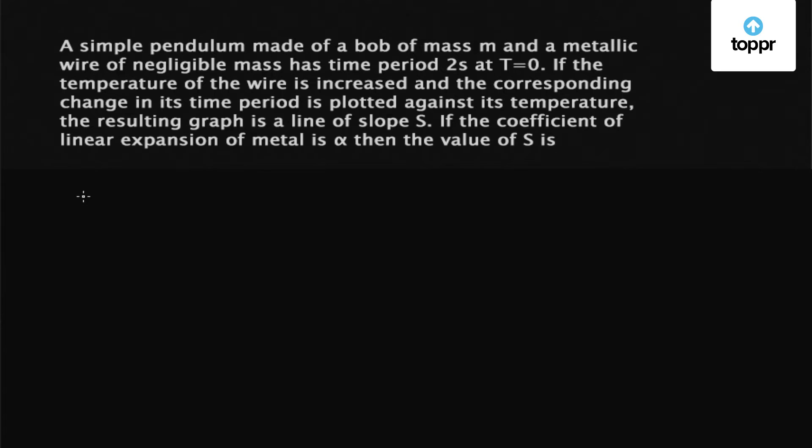So we know that the time period of a pendulum is given by t = 2π√(L₀/g), where t is the time period, g is the acceleration due to gravity, and L₀ is the length of the pendulum.